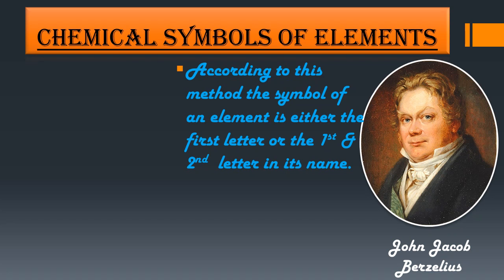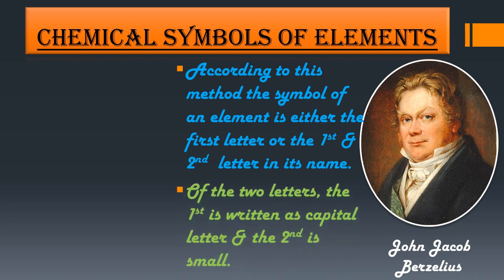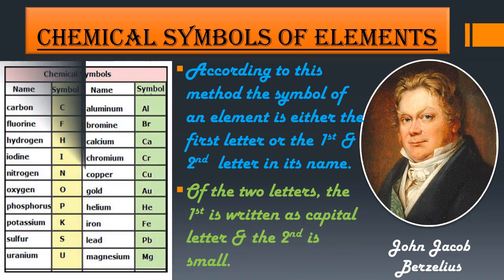According to this method, the symbol of an element is either the first letter, or the first and a specific second letter of its name. Of the two letters, the first is written as a capital letter and the second as a small letter. For example, for carbon, the symbol is C — the first letter, written in capital.